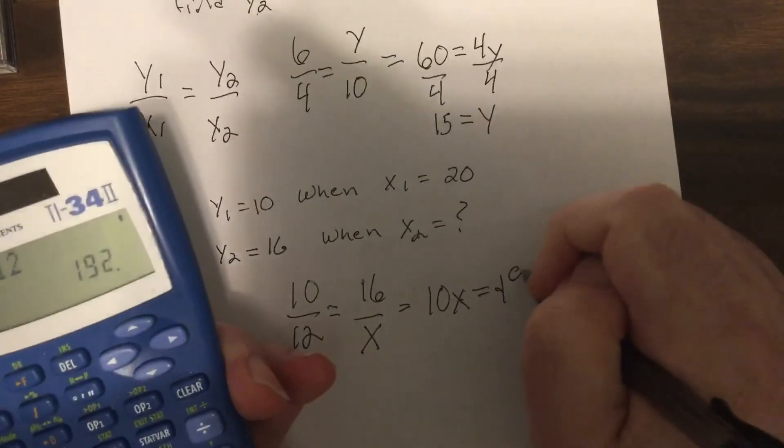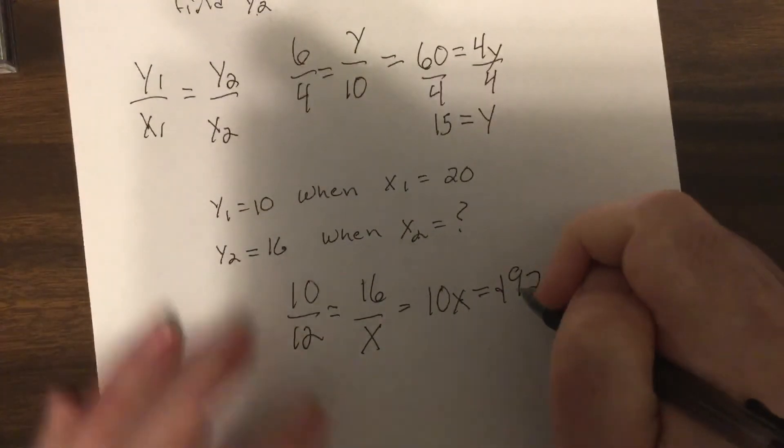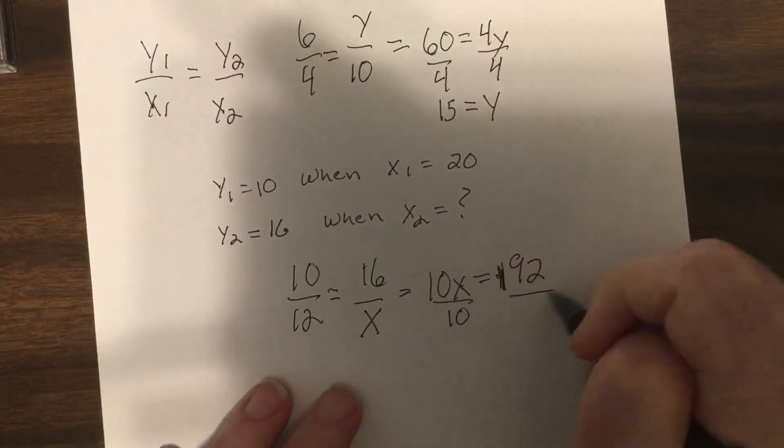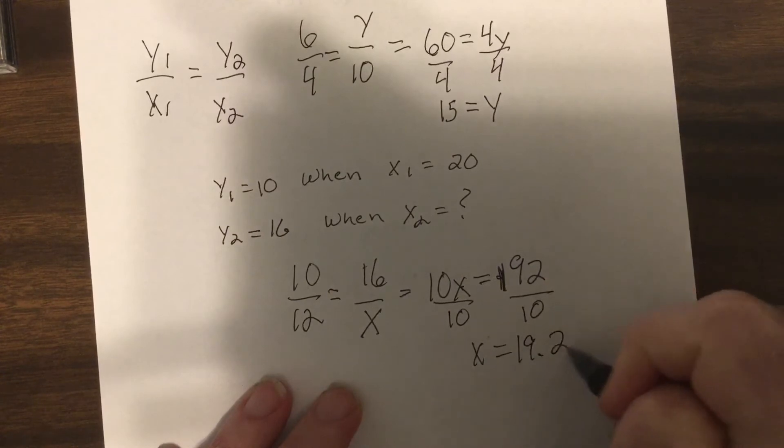You'd have x equals 19.2. Now the other one is inverse.